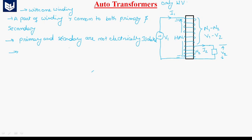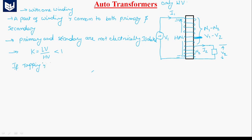If you consider the transformation ratio K, it is equal to LV divided by HV. In case of autotransformers, K is always less than 1. If the secondary tapping is exactly at 50%, then K will be 0.5. If tapping is at 75%, then K will be 0.75.